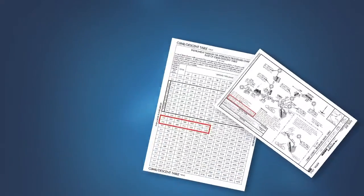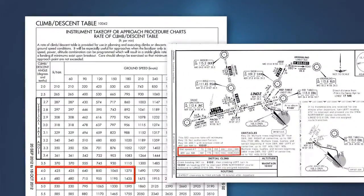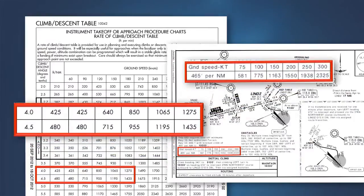To aid the pilot, the U.S. Government Terminal Procedures publication contains a chart that converts the required climb gradient into a corresponding rate of climb value that the pilot can reference during the departure. On Jeppesen charts, this information is published on the procedure chart.